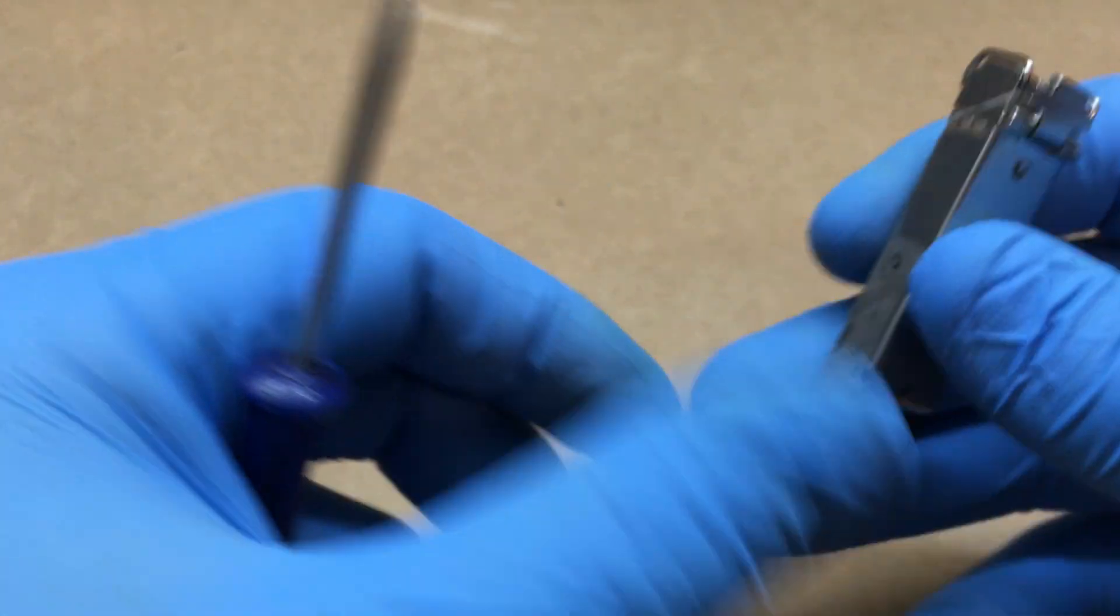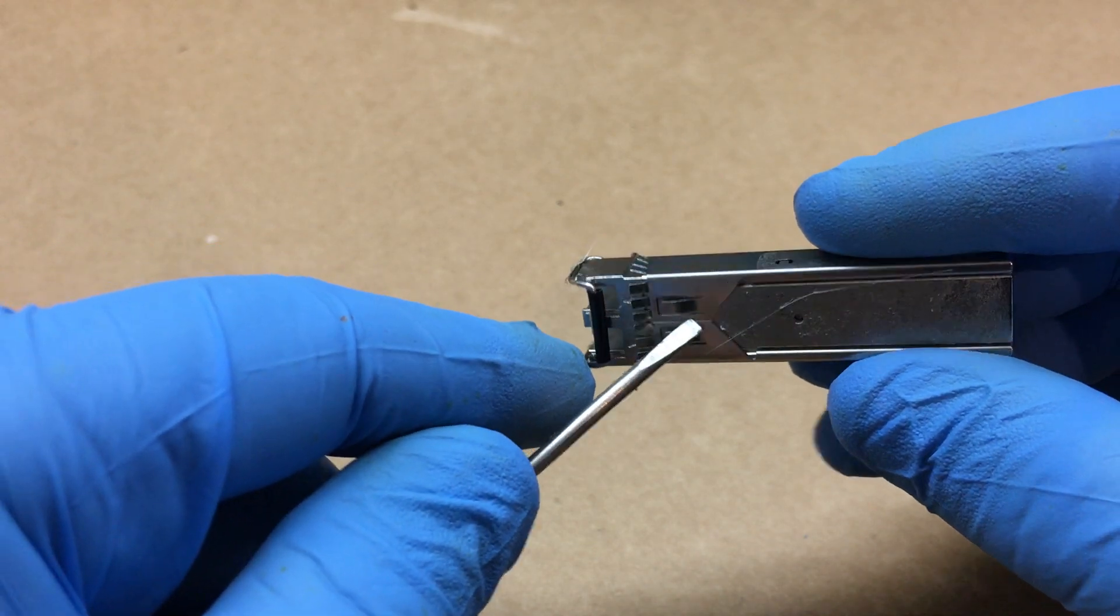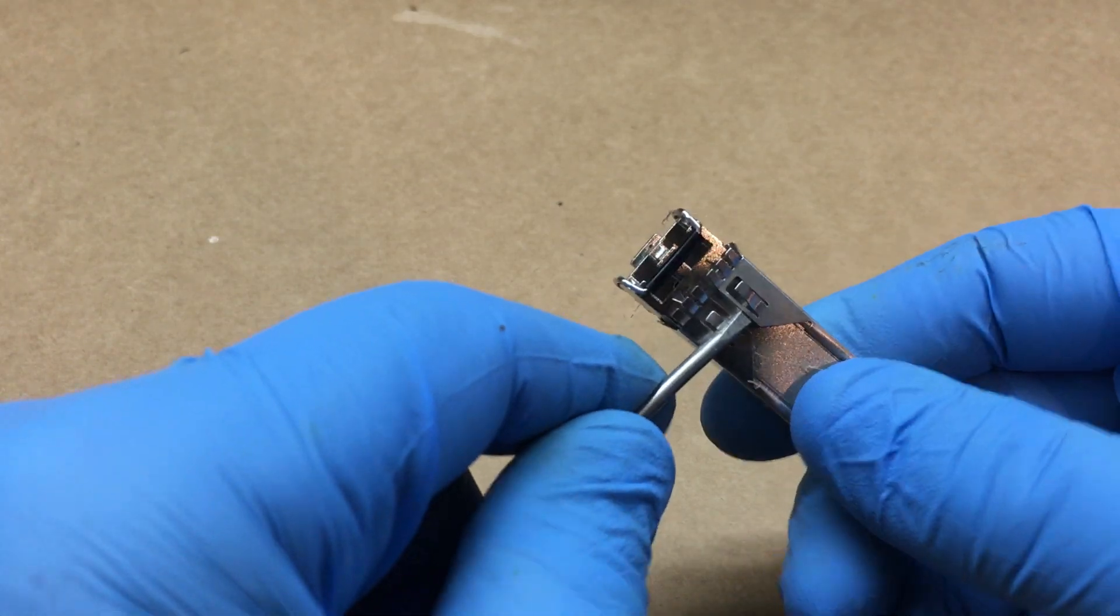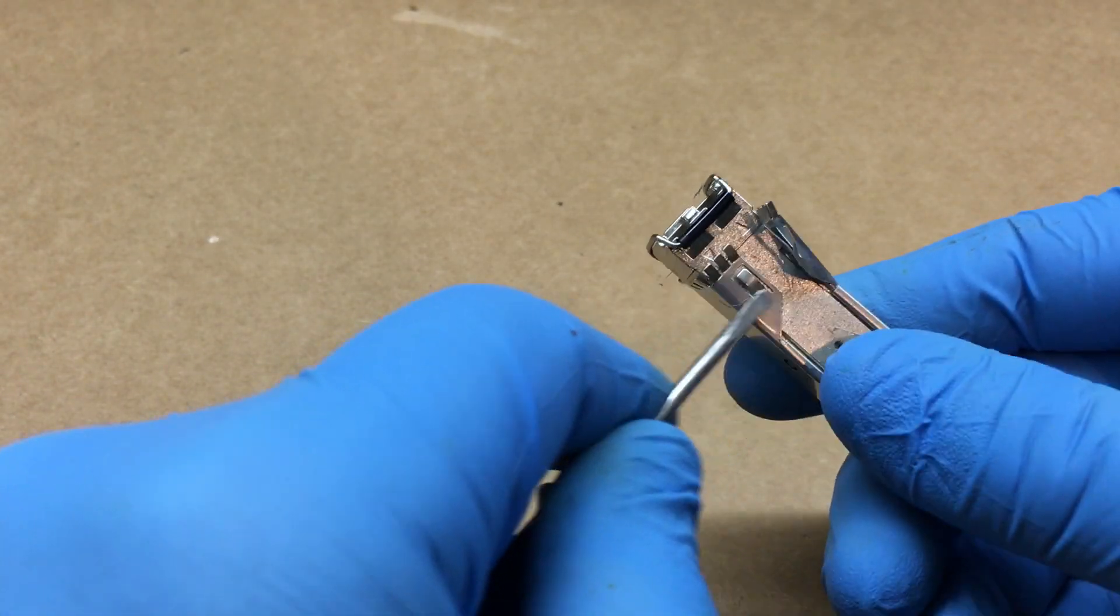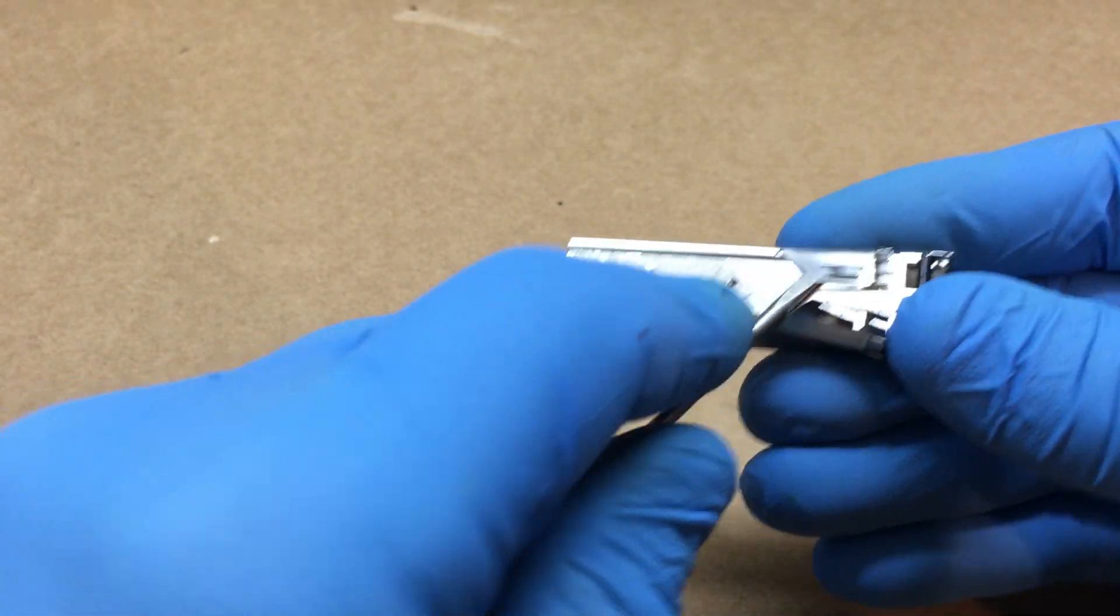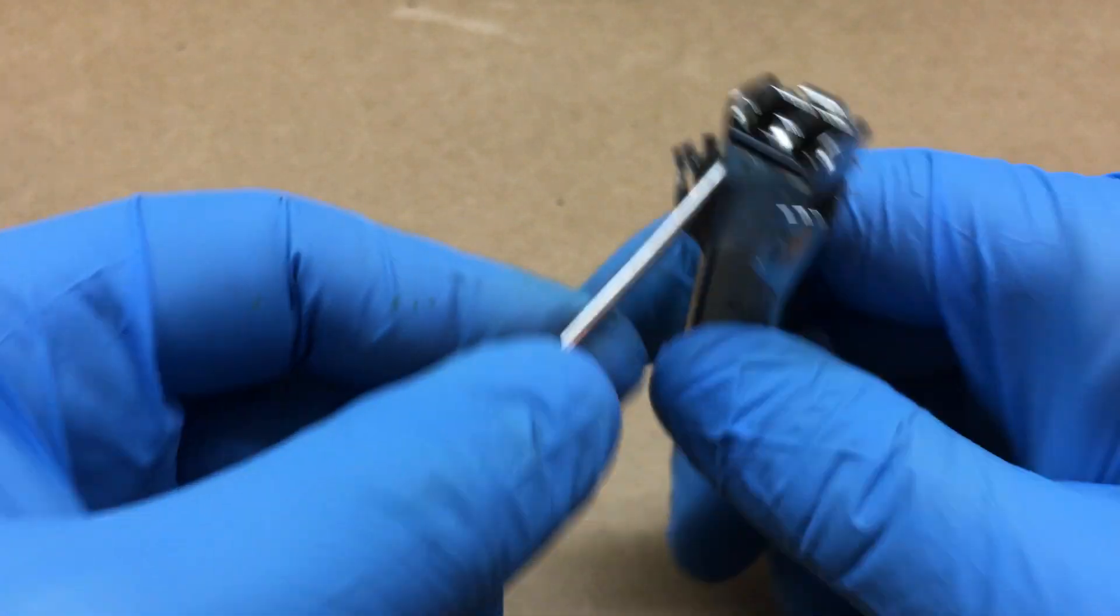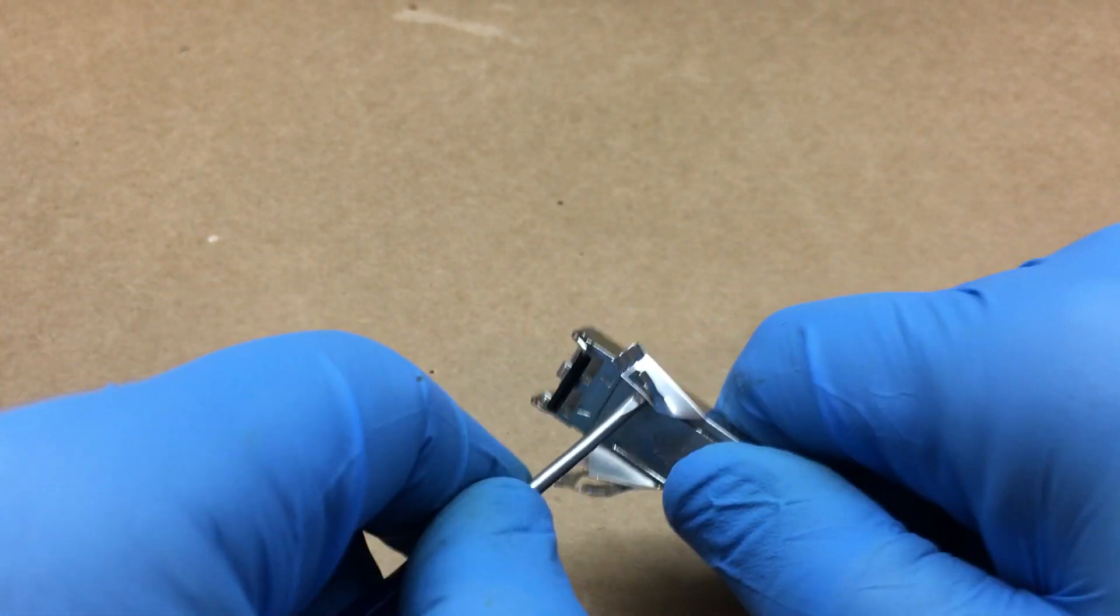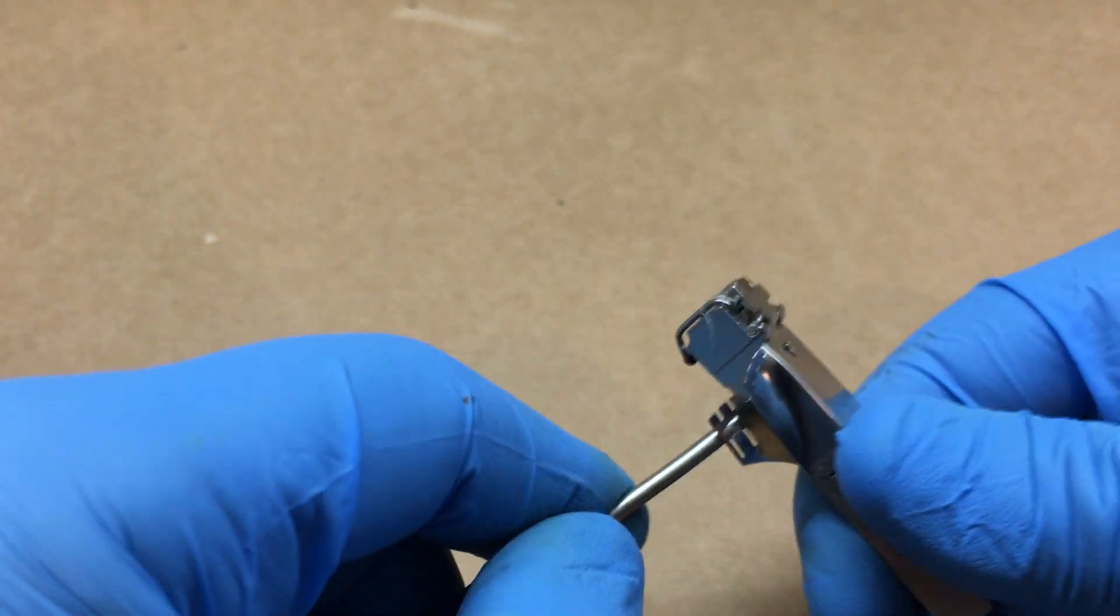As you can see, we can separate this right in here. You got to be careful because this metal here is pretty sharp and you can really cut yourself pretty good on this stuff. So we're just gonna pry this around like such and try not to stab yourself with the screwdriver.